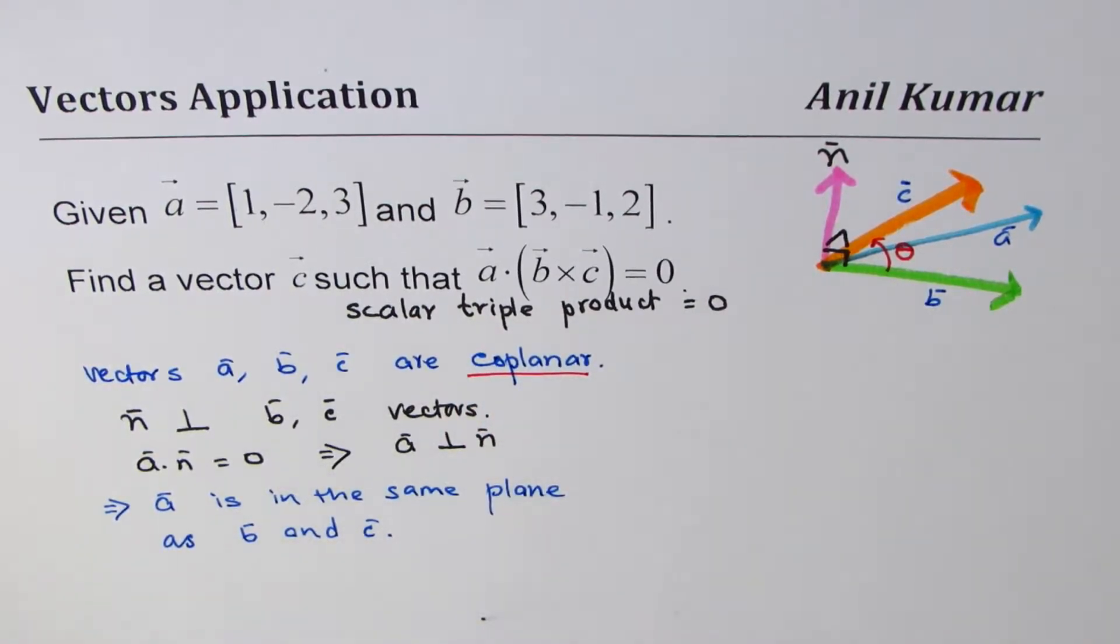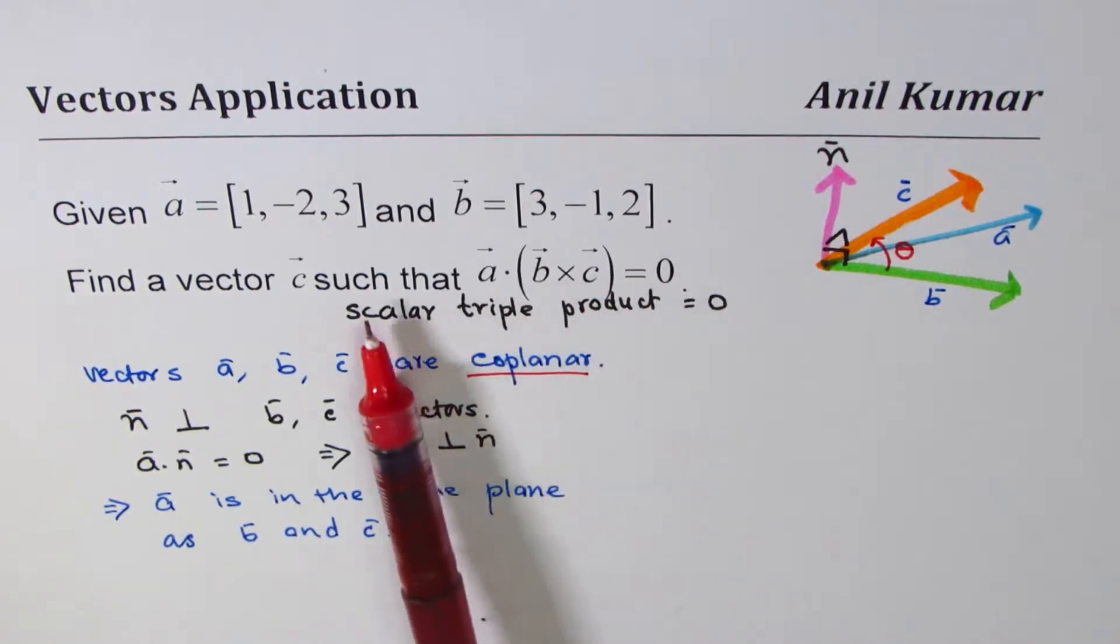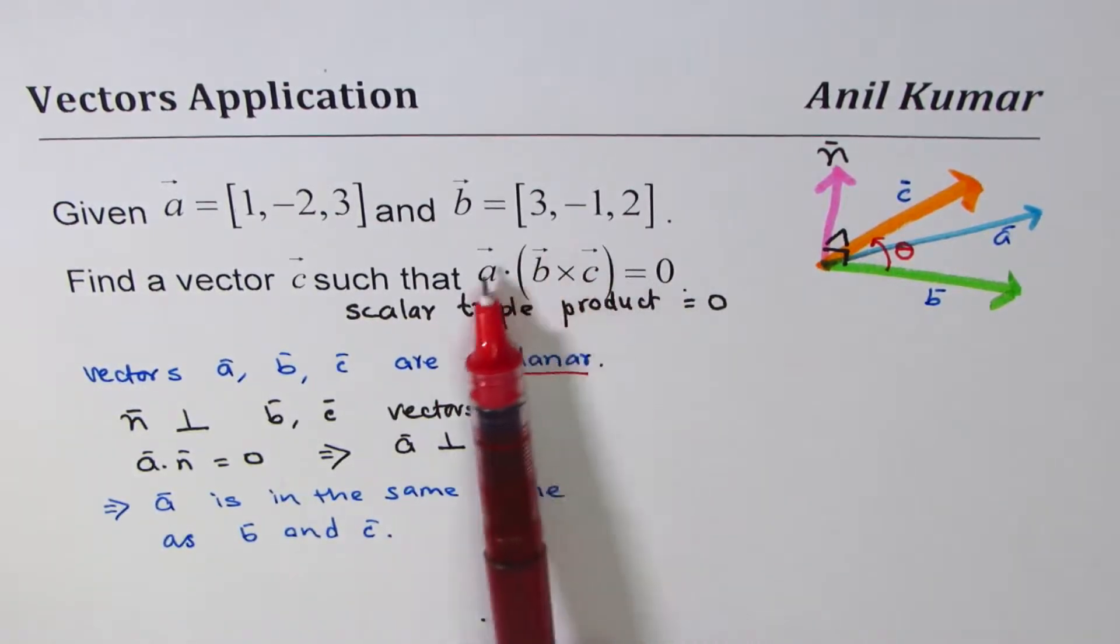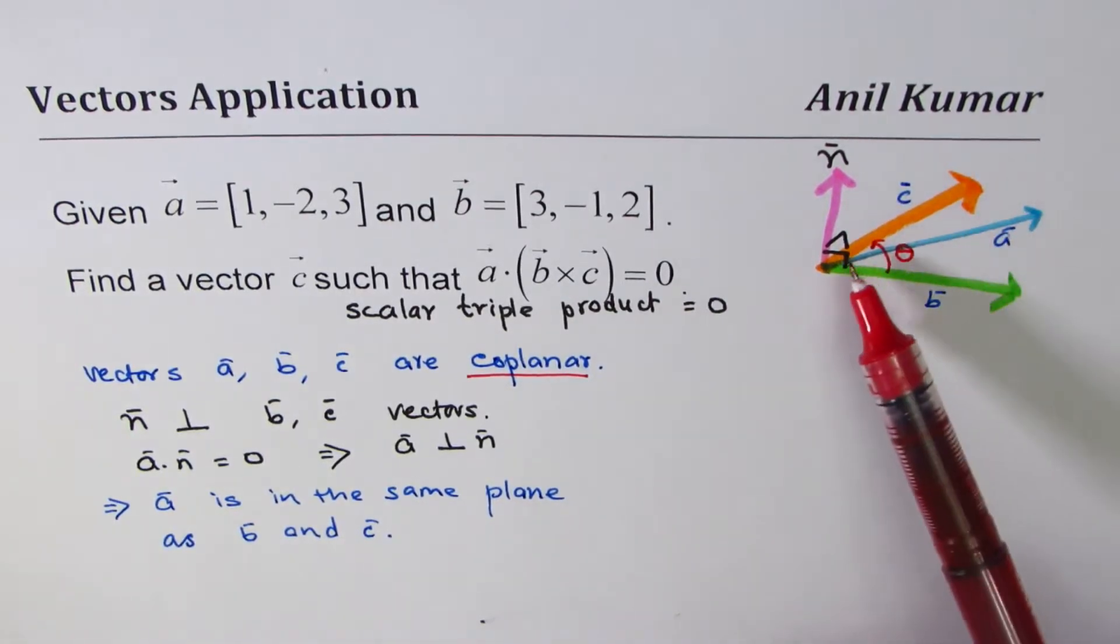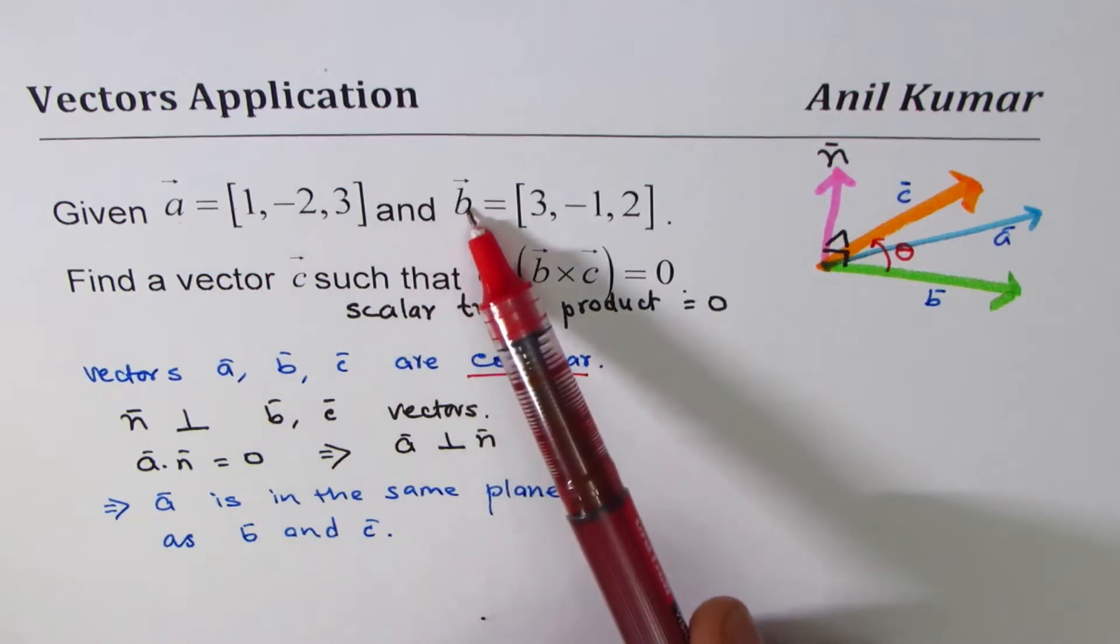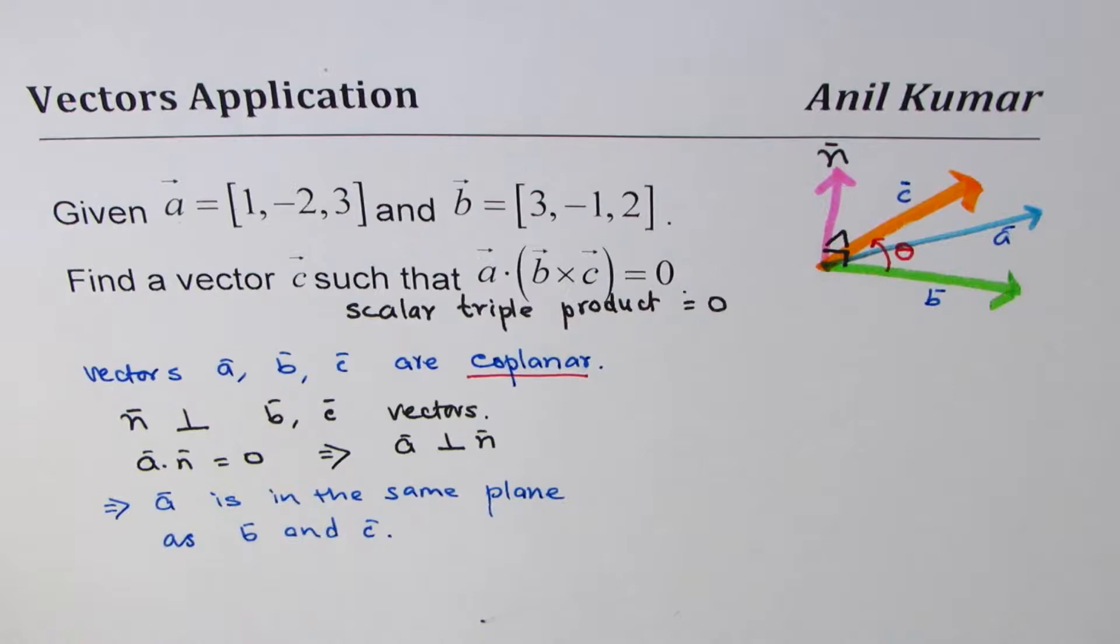Now how do you find c such that this a dot (b cross c) equals 0 prevails? The idea here is we could find c as linear combination of a and b only, then c, a, and b will be coplanar.